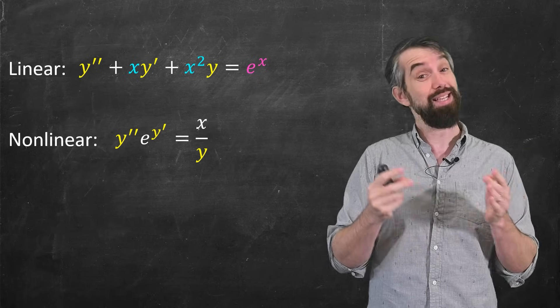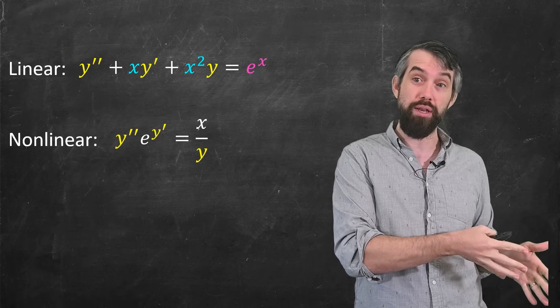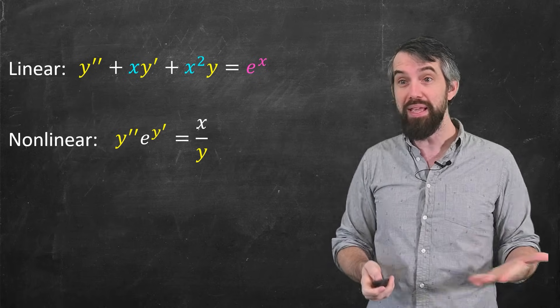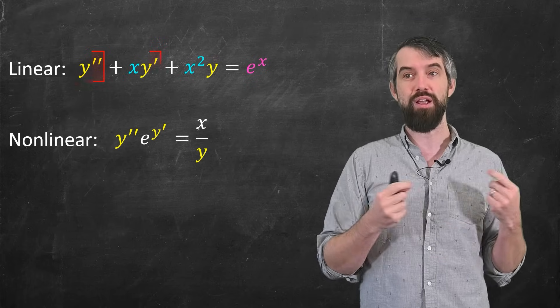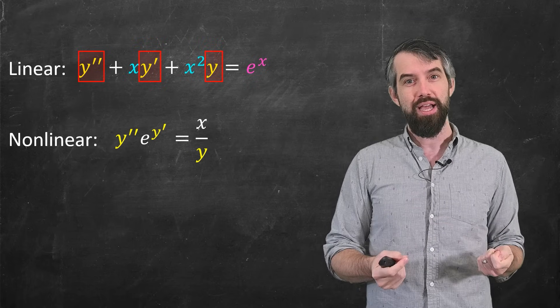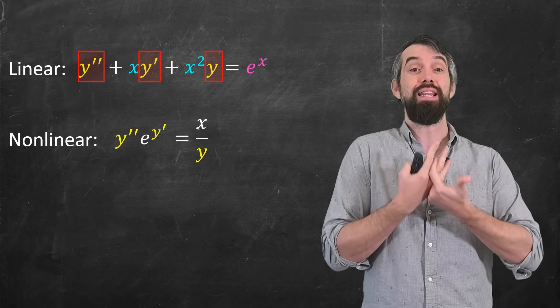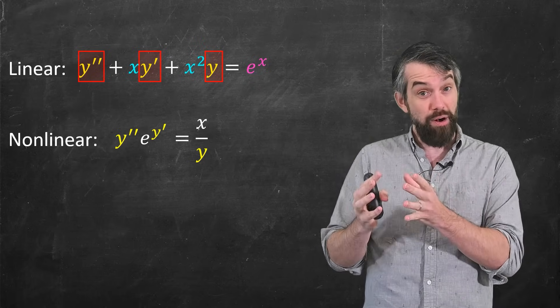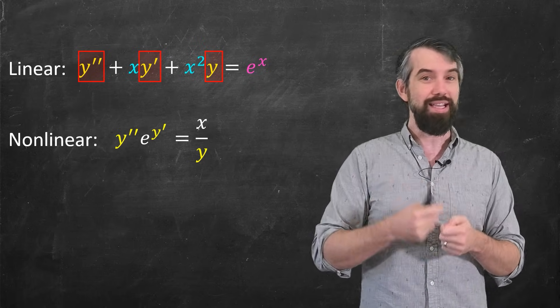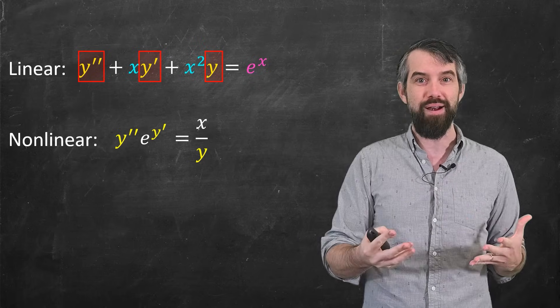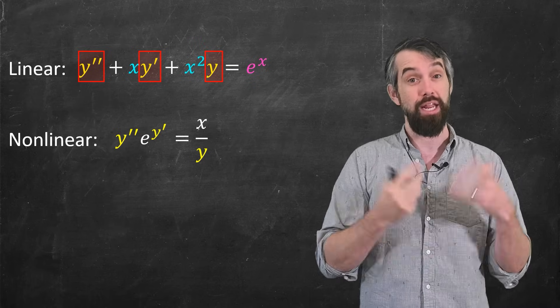Then I also really try to decide is it linear or is it nonlinear. So by linear what I mean is that the dependent variable y and its derivatives, that those all appear as part of a linear equation. They are those variables to the power of 1, not e to the variable or 1 over the variable or any of the other nonsense that can appear in a nonlinear equation.